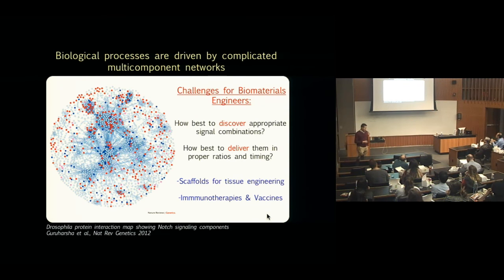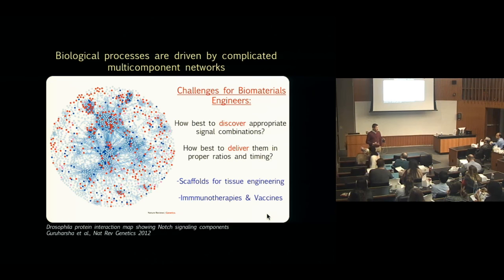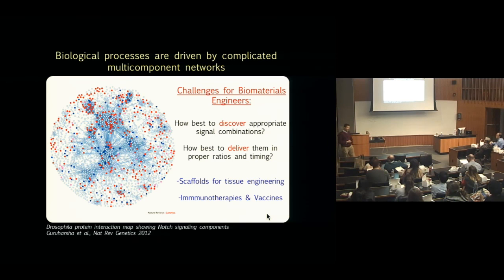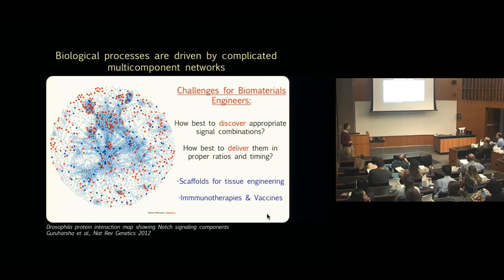One of the problems that our group struggles with on a broad scale — and I think this is true in biomedical engineering, and especially in biomaterials — is that when you're trying to engineer in biology, biology puts up a fight. Biology is characterized by highly multifactorial networks of signaling and pathways, and the trick in engineering within these systems is to identify engineerable pivot points within them.